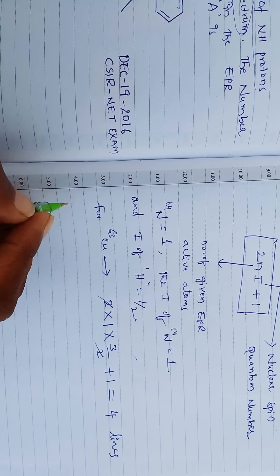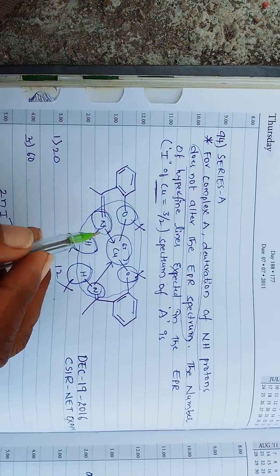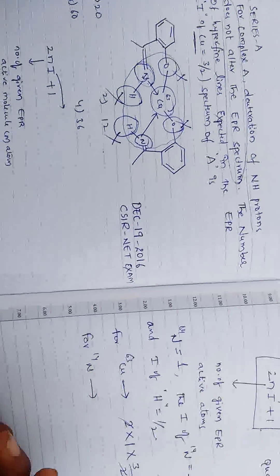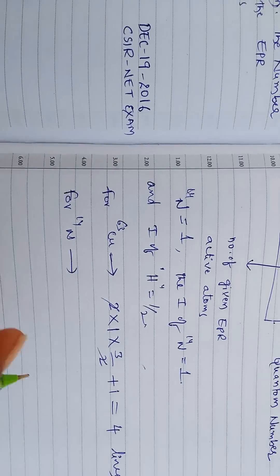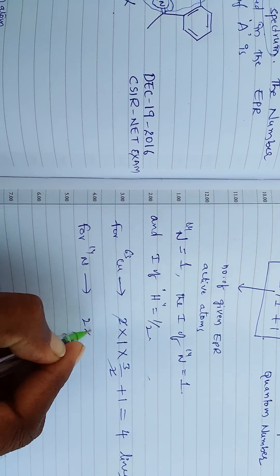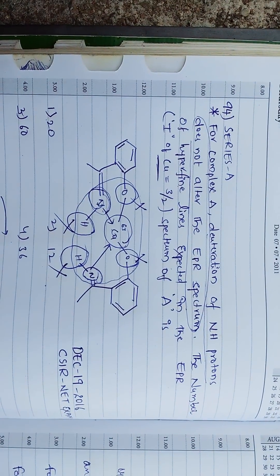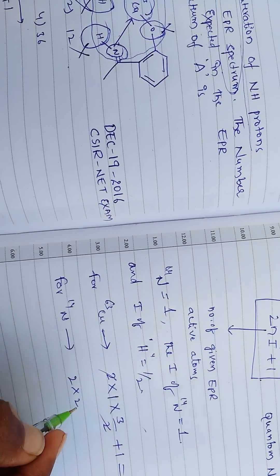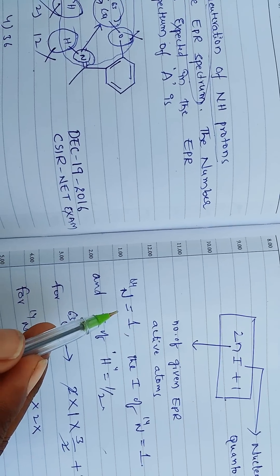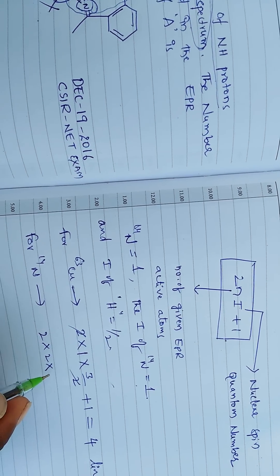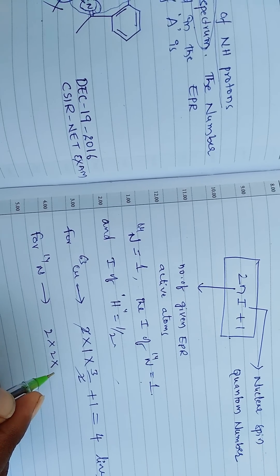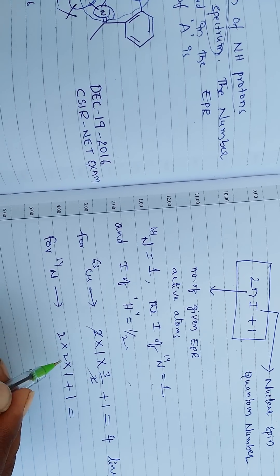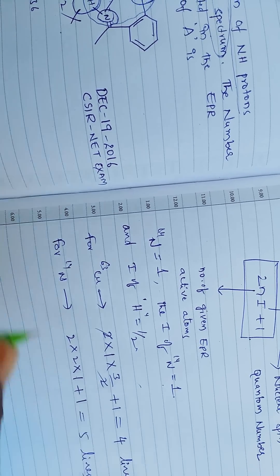Next, the other interacting atom is nitrogen. For nitrogen, applying the same formula 2NI + 1: N equals 2 (two nitrogen atoms interacting with copper), and I of N-14 equals 1. So: 2 × 2 × 1 + 1 = 4 + 1 = 5 lines from the nitrogen atoms.